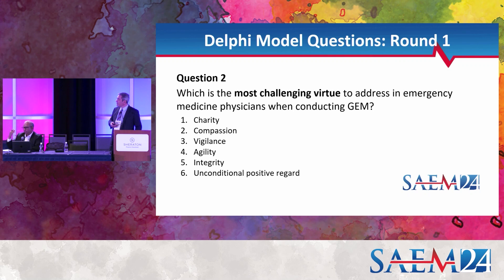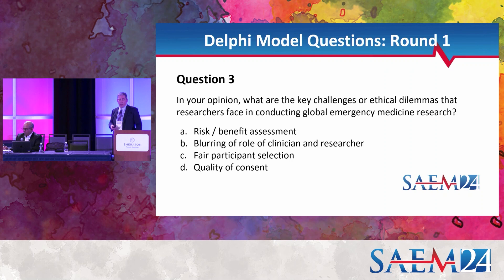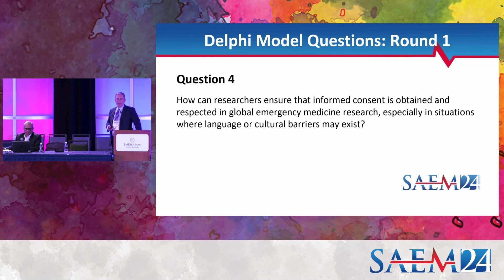James: if we applied that idea to the Delphi process, using input from interviews rather than having laypeople participate in iterative rounds takes care of the engagement challenge. Dr. Kumar: I love that idea — coming up with a list of questions to be addressed by the focus group, then bringing it back to the working group who then continue with the Delphi. Question three: in your opinion, what are the key challenges or ethical dilemmas that researchers face in conducting global EM research? Again, these are all important concepts, but the key is identifying trends and what specific people or groups feel are the key challenges. This builds on the first question with different types of challenges.